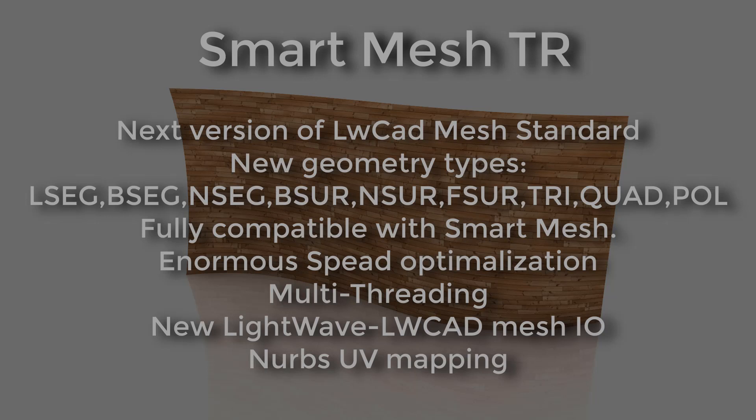The biggest internal change in SmartMesh TR is that now we have new internal geometry types: line segments, B-spline segments, NURPS segments — these three are the curves. Then B-spline surface, NURPS surface, rational surface — these are 3D NURPS surfaces. Then flat surface based on edges of line segments, B-spline segments and NURPS segments, and then triangles, quads and polygons. As a user you don't have to care about them; it is just an internal division. From the user side you have just curves and surfaces, but for internal functions of LightwaveCat this is a huge improvement.